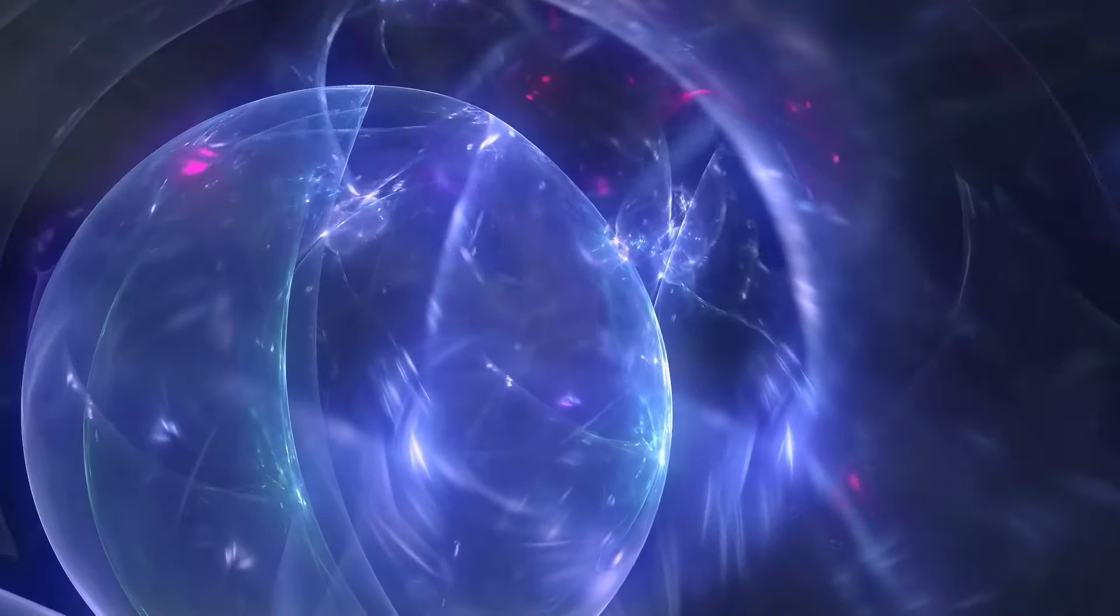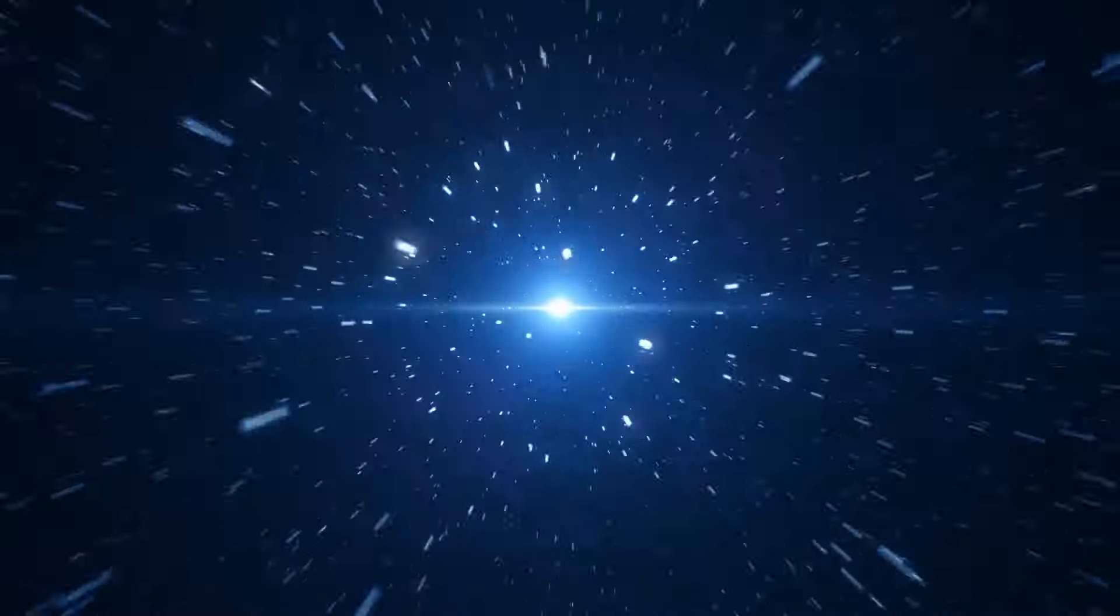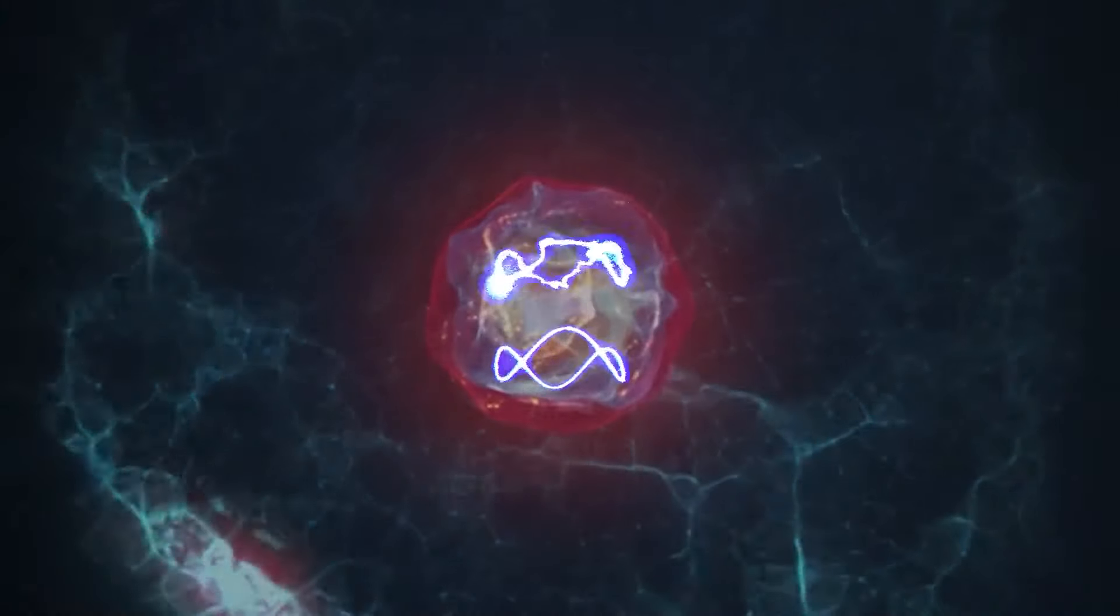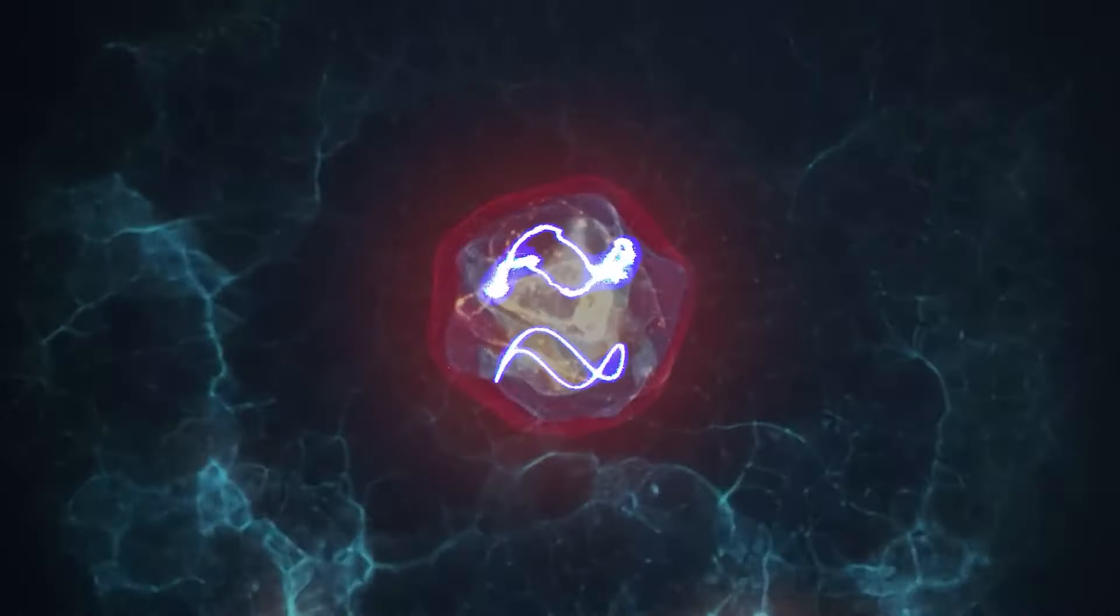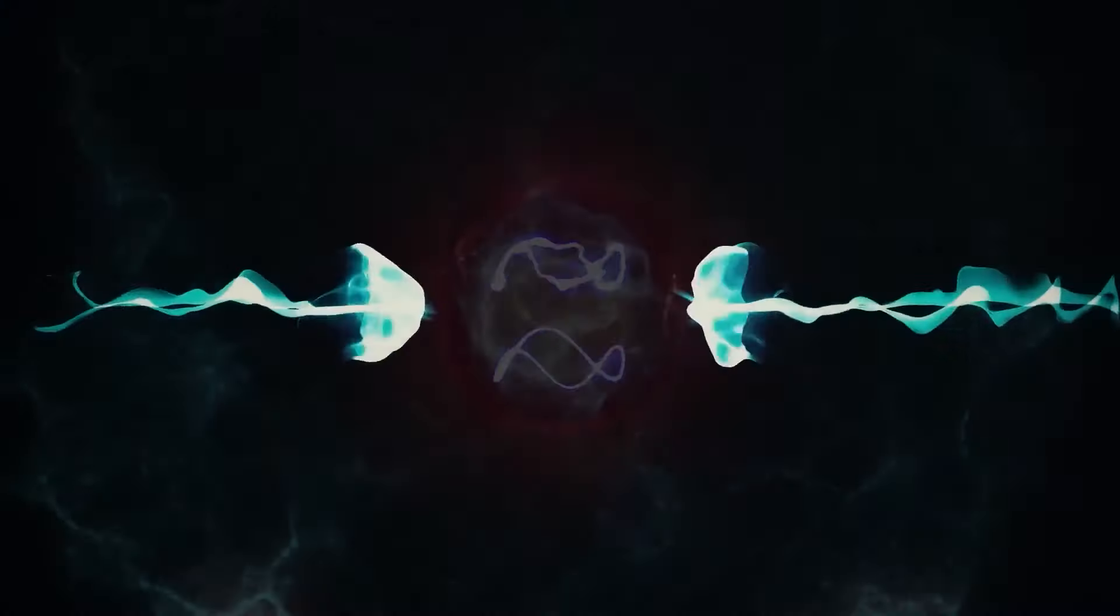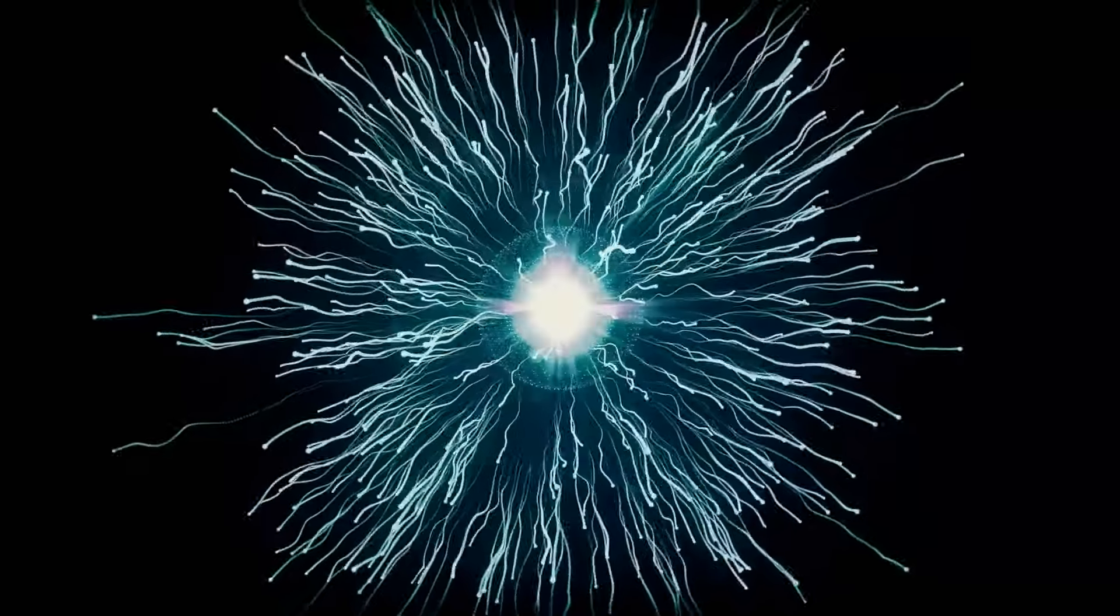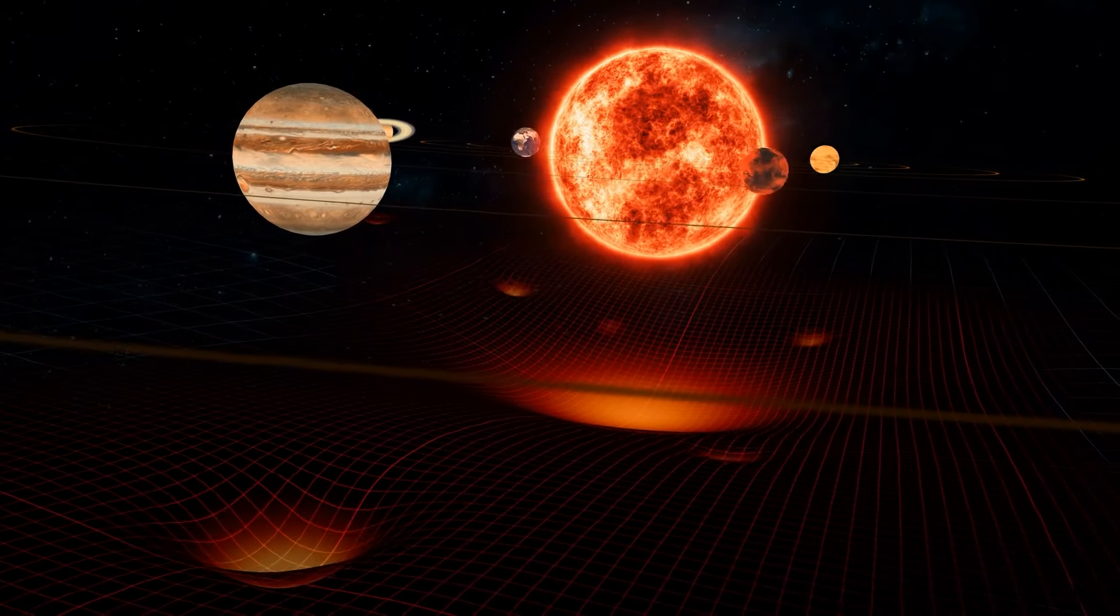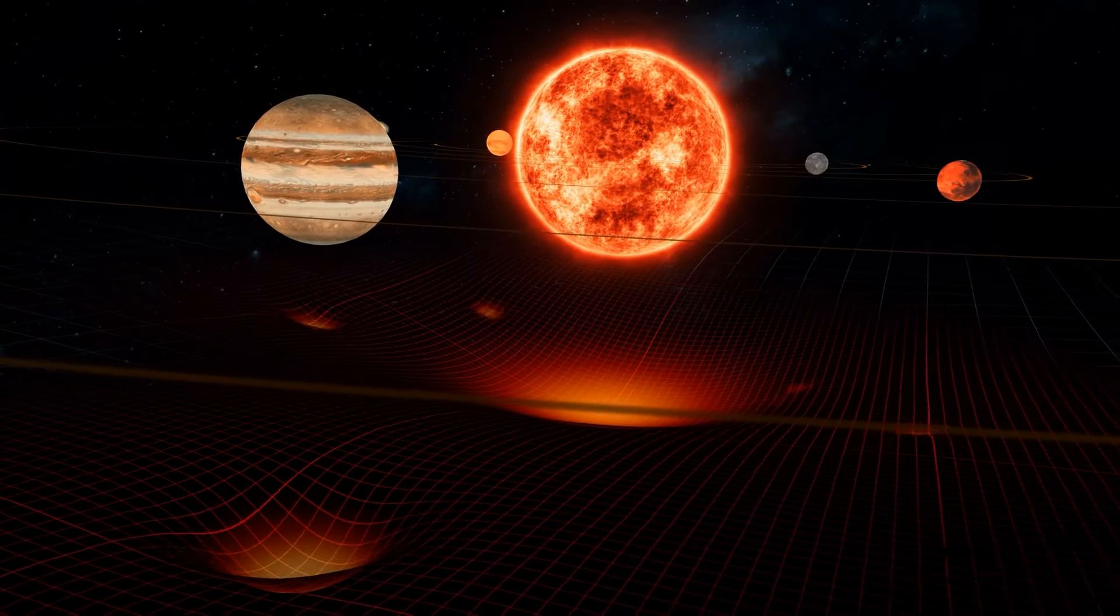According to Einstein's theory of general relativity, space and time are not distinct entities, but are intertwined, creating a unified four-dimensional fabric known as space-time. In this framework, the universe isn't just composed of particles moving through space. It's a dynamic interplay between matter and the curvature of space-time itself. This interaction results in phenomena like gravity, which occurs due to the warping of space-time by massive objects.